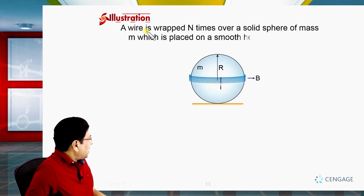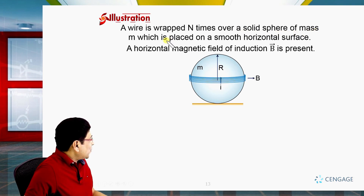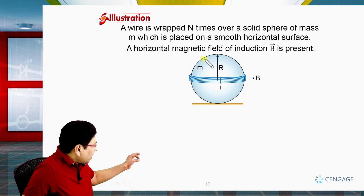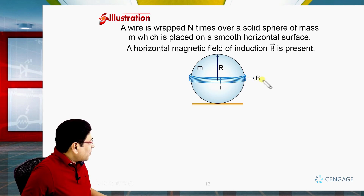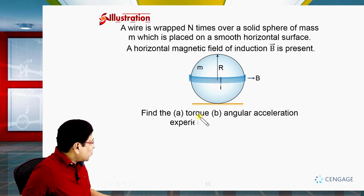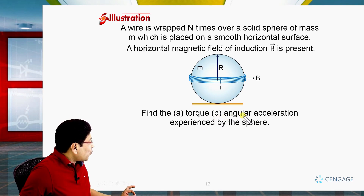In this illustration, a wire is wrapped n times over a solid sphere of mass m, which is placed on a smooth horizontal surface. A horizontal magnetic field of induction B vector is present. The solid sphere has radius r. The binding of the wire carries current i and this binding lies on the diametric plane of the sphere. Magnetic field is in the horizontal direction. In part A we need to find the torque, and in part B we need to find the angular acceleration experienced by the sphere.